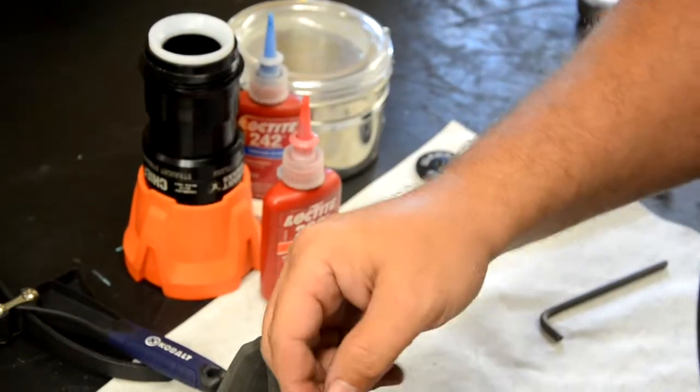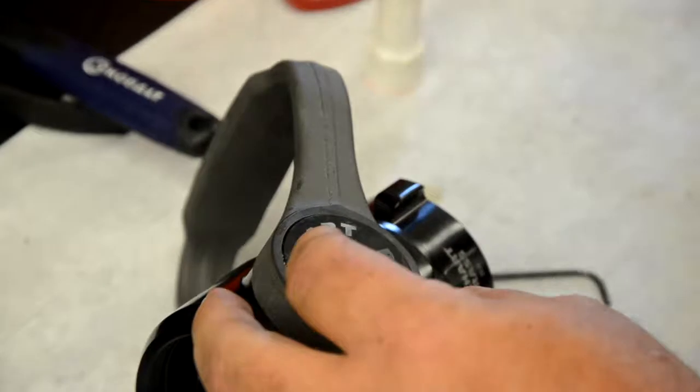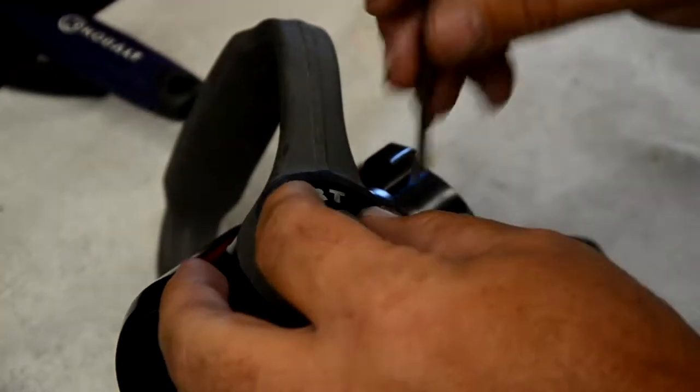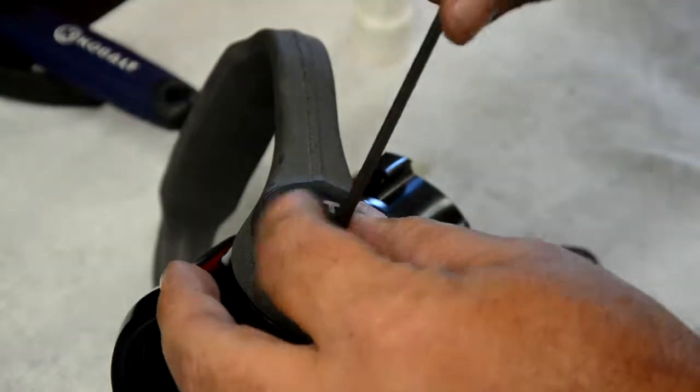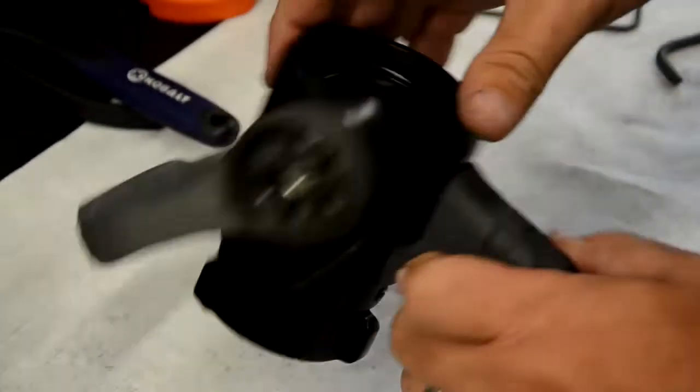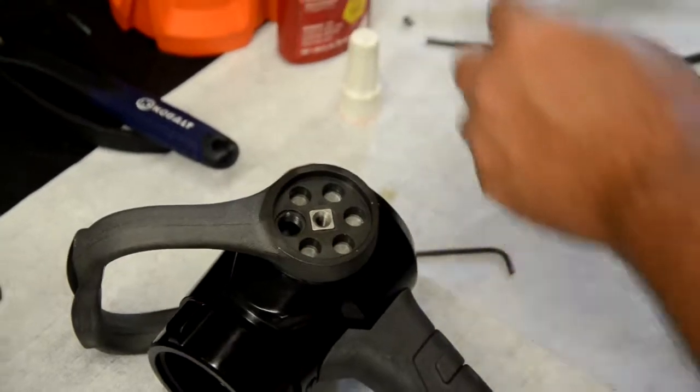Then, apply a small dab of red Loctite number 262 or equivalent to the socket cap screw and reinstall until tight. Next, we're going to repeat this process on the other side of the nozzle.